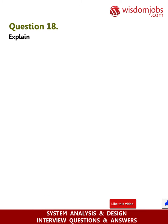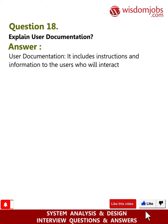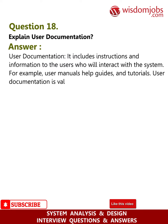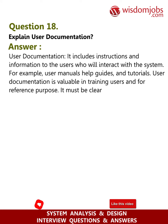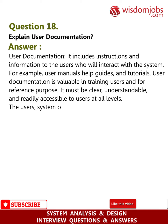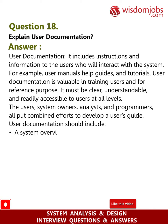Question 18: Explain user documentation. Answer: User documentation includes instructions and information for users who will interact with the system — for example, user manuals, help guides, and tutorials. User documentation is valuable for training users and for reference purposes. It must be clear, understandable, and readily accessible to users at all levels. Users, system owners, analysts, and programmers all combine efforts to develop a user's guide.